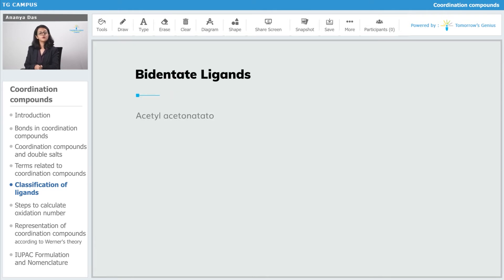The first example of a bidentate ligand is acetyl-acetonato. Acetyl-acetonato is formed from acetyl-acetonate.